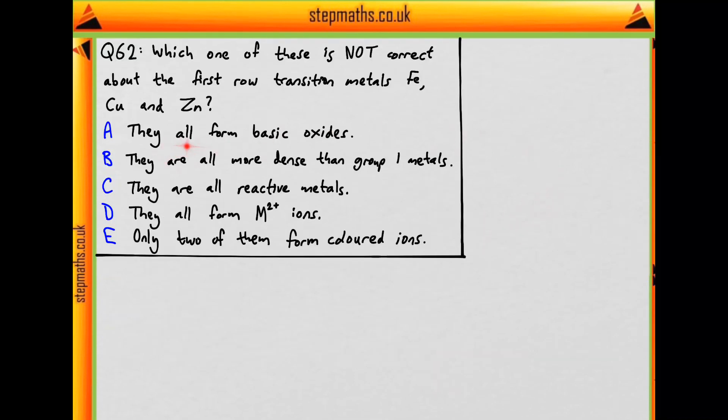So firstly, do they all form basic oxides? Well, this is actually a general property of metals. Elements on the left of the periodic table generally form basic oxides, and those on the right in the main group, that's the P block, generally form acidic oxides. So these are of course metals, and they form basic oxides.